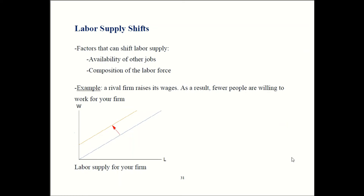So what can shift the labor supply curve? Two factors are the availability of other jobs and the composition of the labor force. Your book adds migration and immigration as additional factors, but those really belong in the same category of composition of the labor force. For example, if you own a firm and a competitor starts paying workers more, that's going to attract workers to them and cause workers to leave your firm, making it harder for you to hire. As a result, the labor supply curve shifts back.